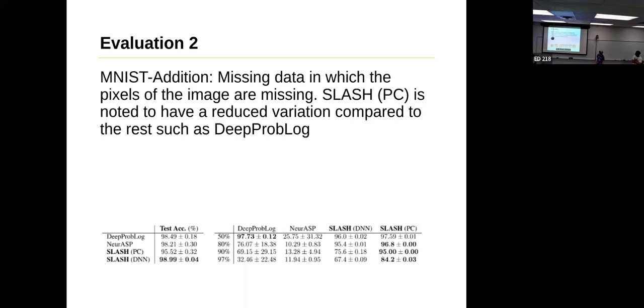It's Evaluation 2. Evaluation 2 is the missing data in which the pixels of the image are missing. That's what John was talking about when he's going through the circuits. If I'm missing like 80% pixel data, is that going to affect my prediction? That's going to be the right chart. The numbers on the side here is how many pixels are missing.